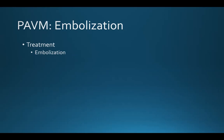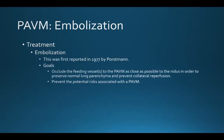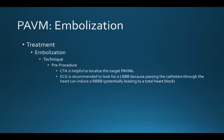Embolization was first reported in 1977 by Portsman. The goals of embolization are to occlude the feeding vessels to the PAVM as close as possible to the nidus in order to preserve normal lung parenchyma, prevent collateral reperfusion, and prevent all the risks associated with a PAVM. Prior to embolization, a CTA is helpful to localize the target PAVMs, and an EKG is recommended to look for a left bundle branch block, because passing catheters through the heart can induce a right bundle branch block, potentially leading to total heart block.